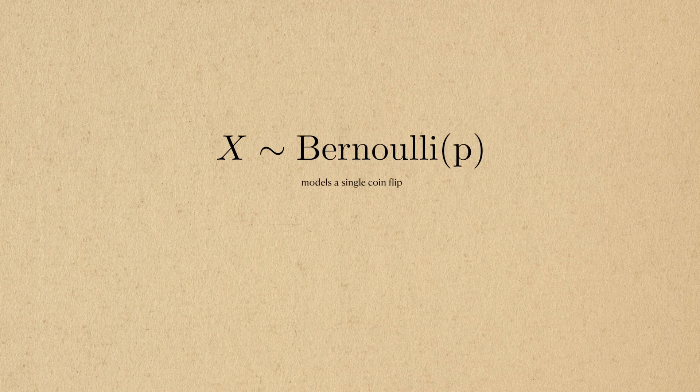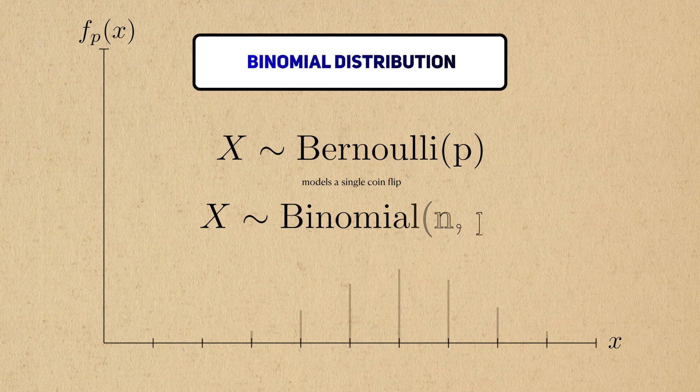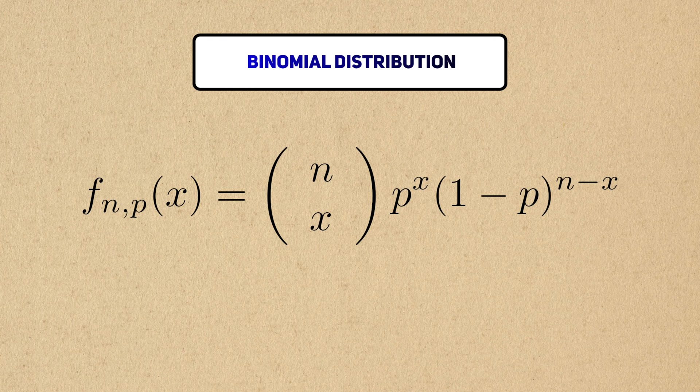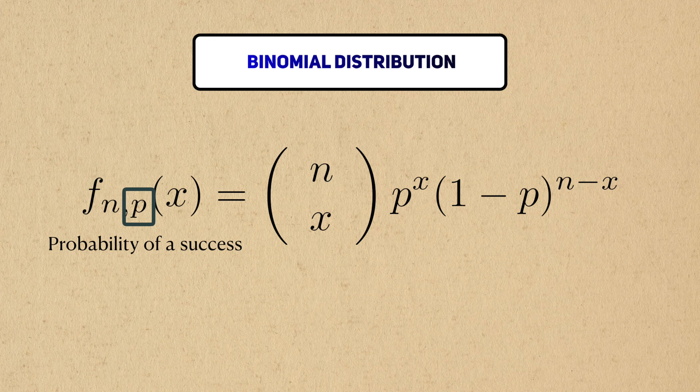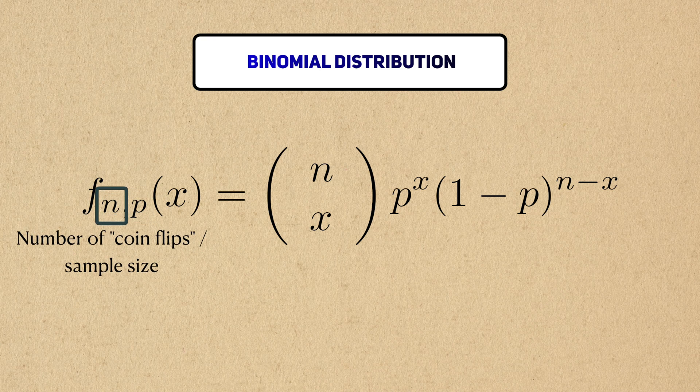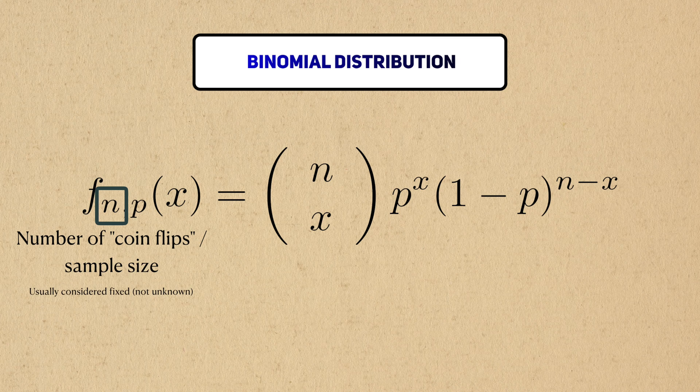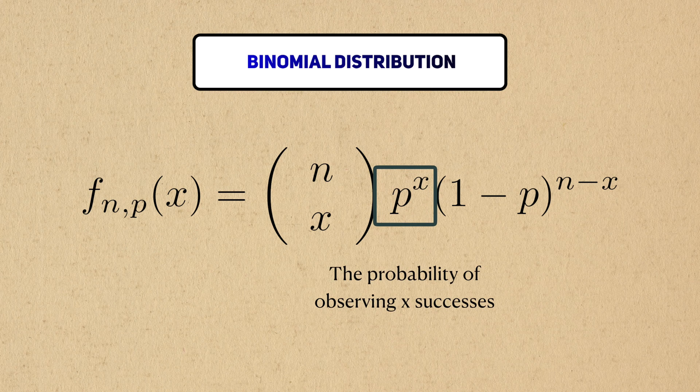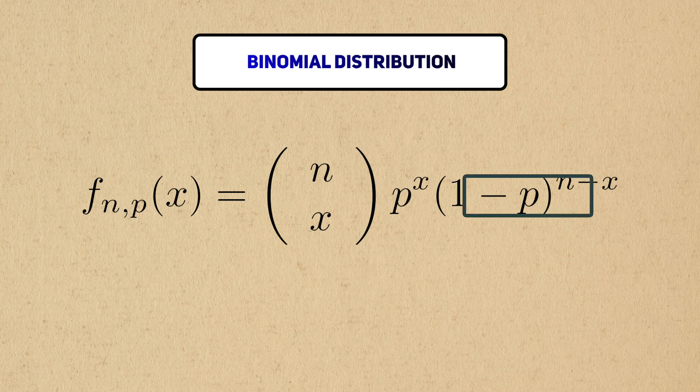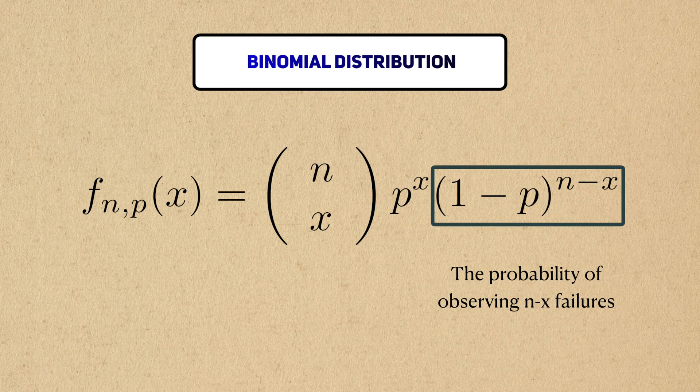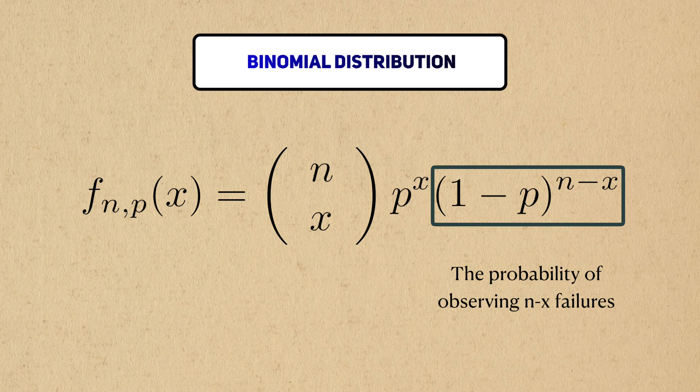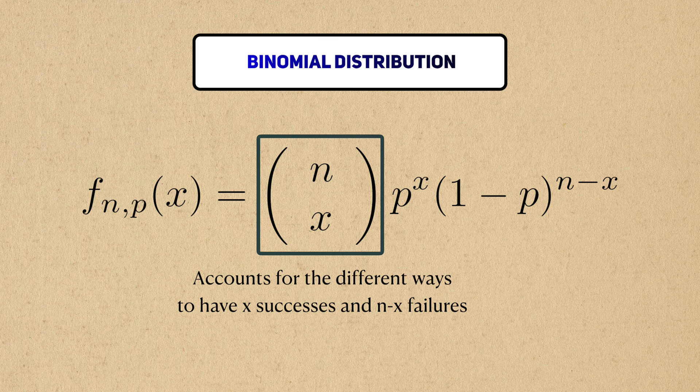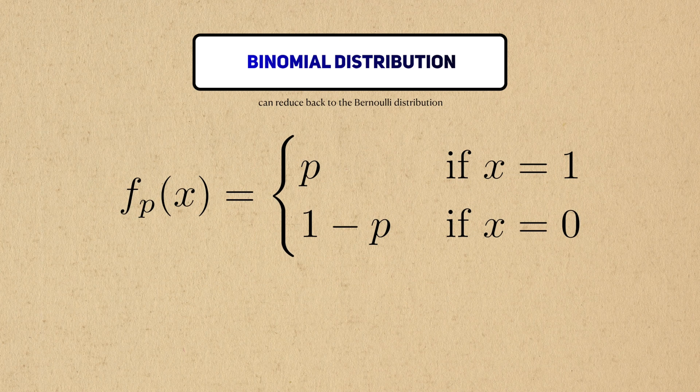If a Bernoulli distribution models a single coin flip, then a binomial distribution models multiple independent coin flips. Here's a probability distribution for a binomial random variable. The parameter p here represents the same idea as in a Bernoulli distribution. The letter n indicates how many coin flips there are. In many cases, we consider this value to be fixed, so p is the only parameter of interest. This second term represents the probability of observing k successes. If we know how many successes there are, we automatically know how many failures there are, which are represented by this third term. Finally, this first term accounts for different ways that there can be k successes and n minus k failures. When n equals 1, we get back the Bernoulli distribution.